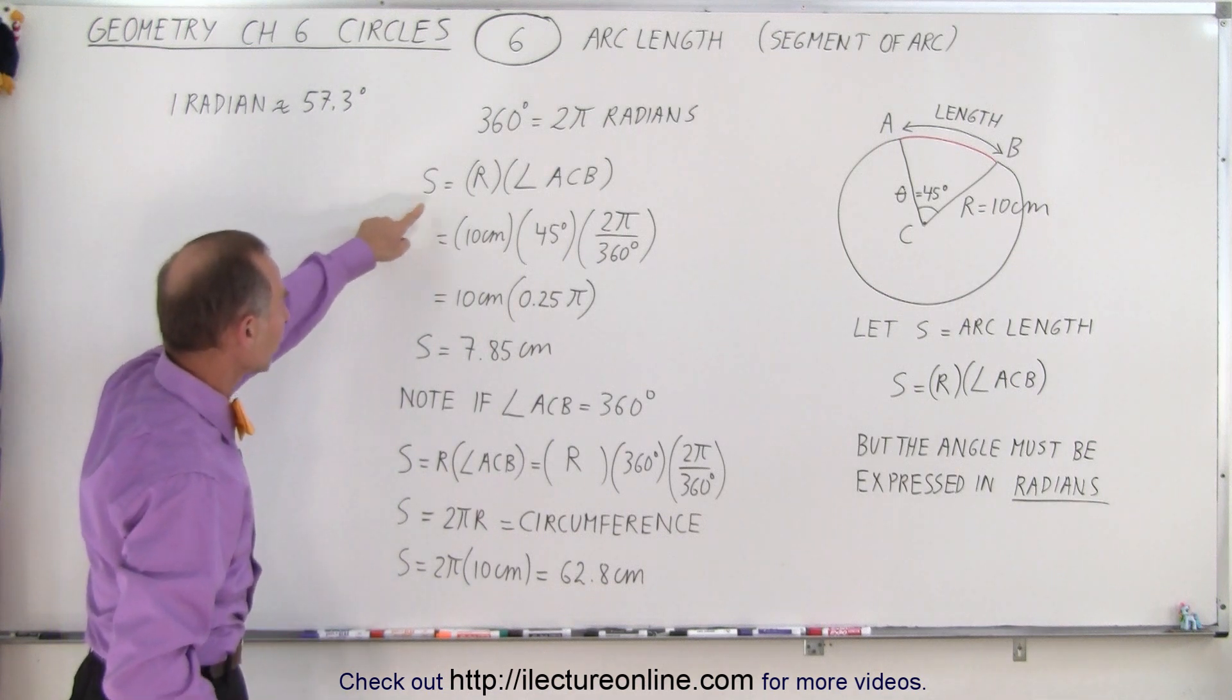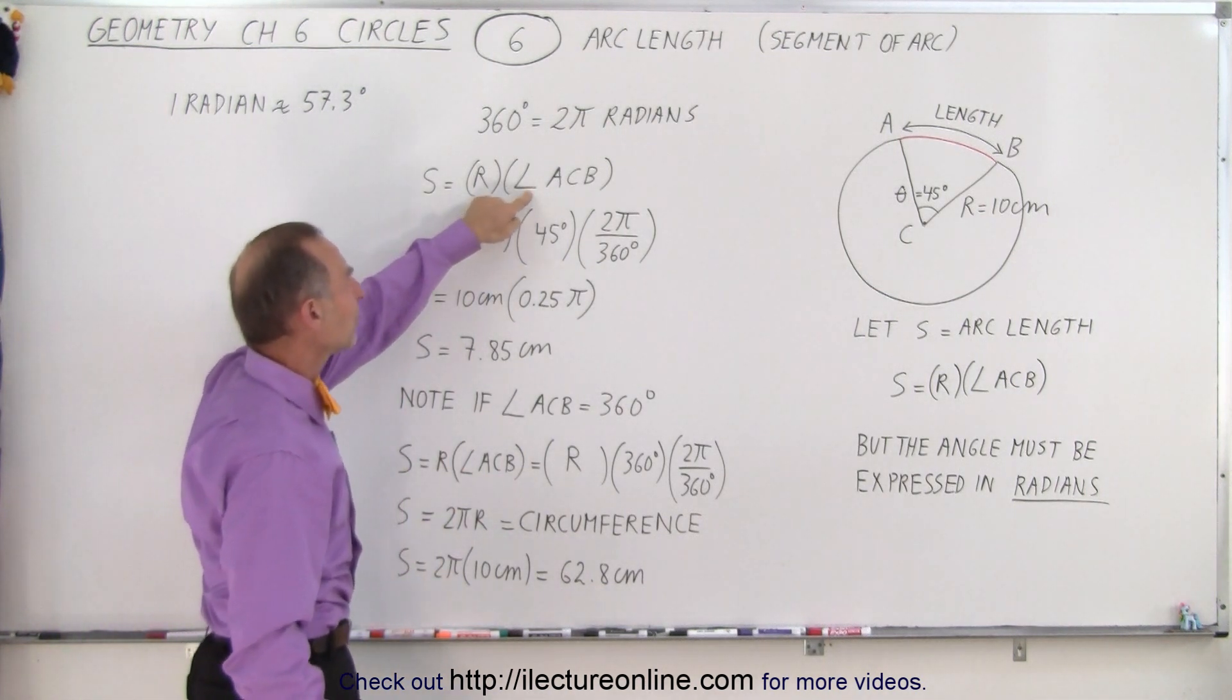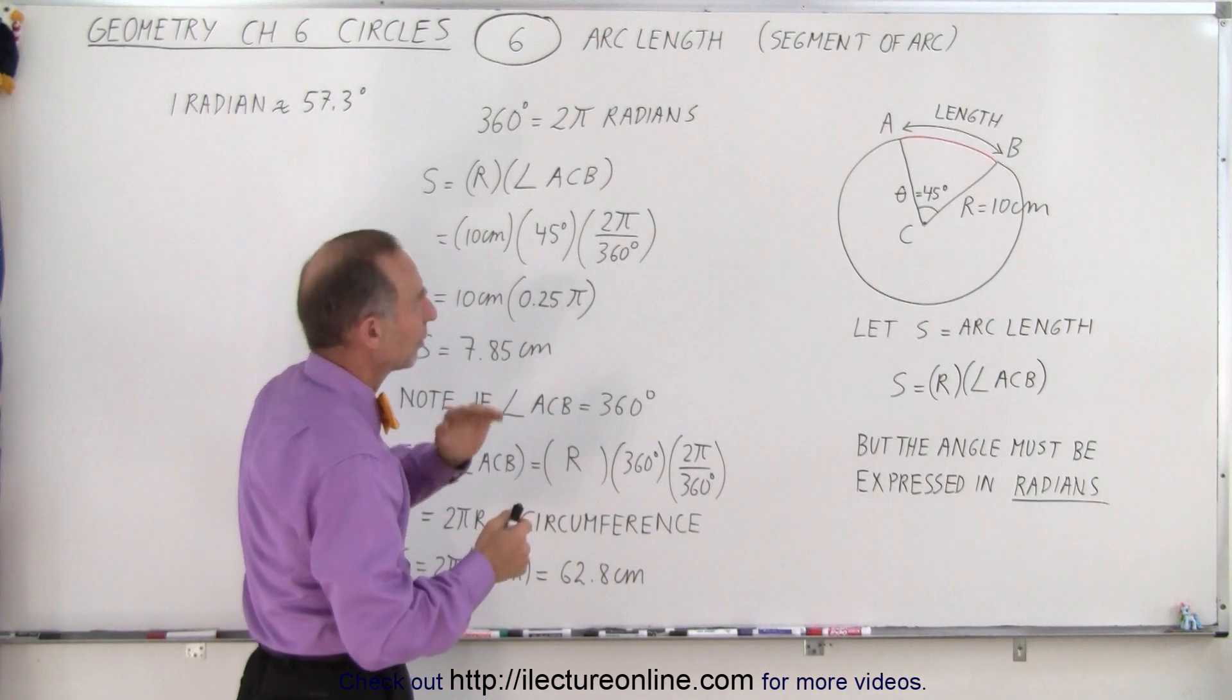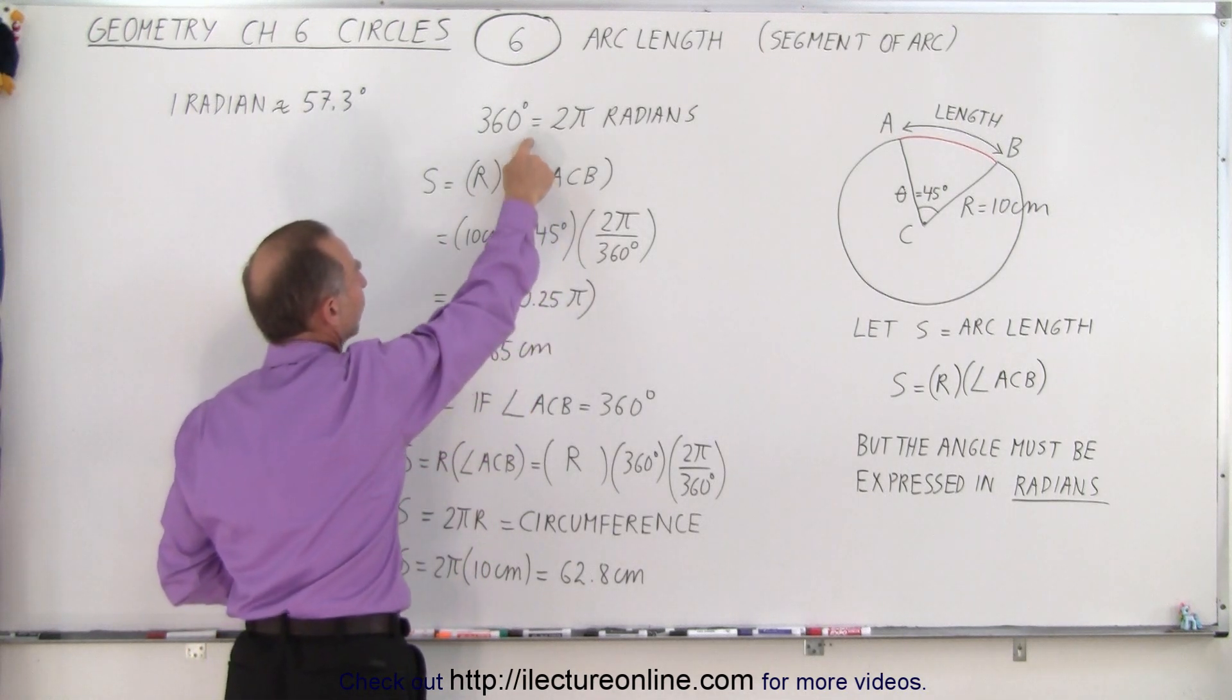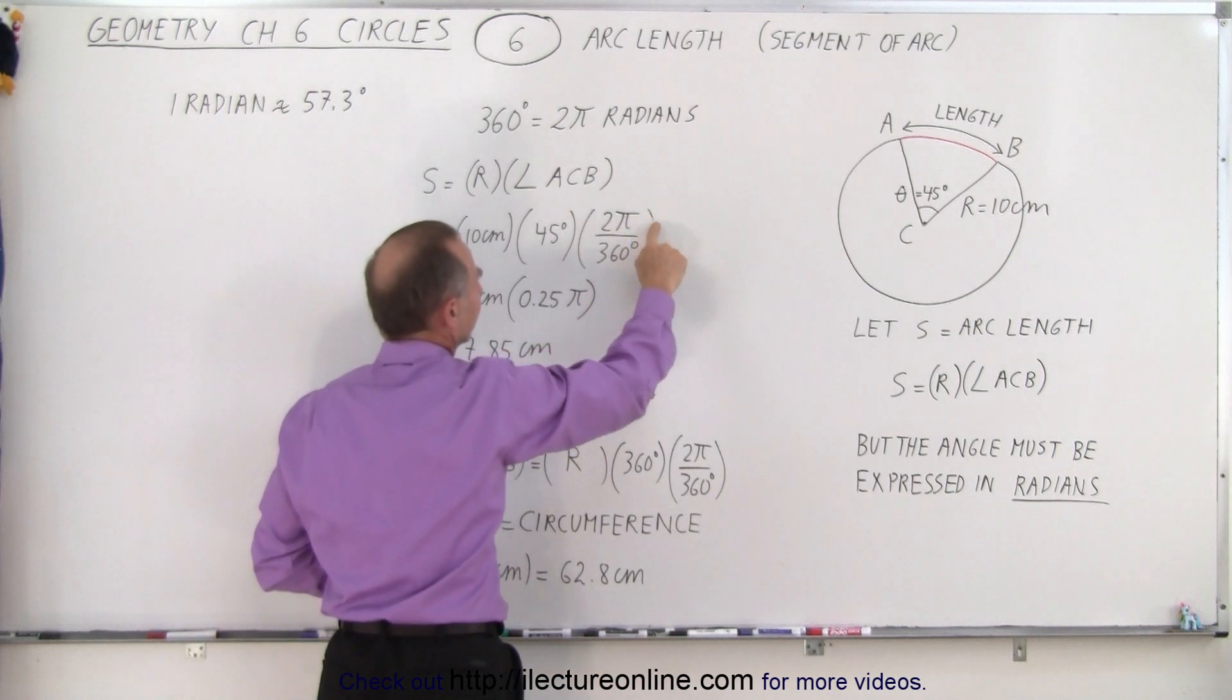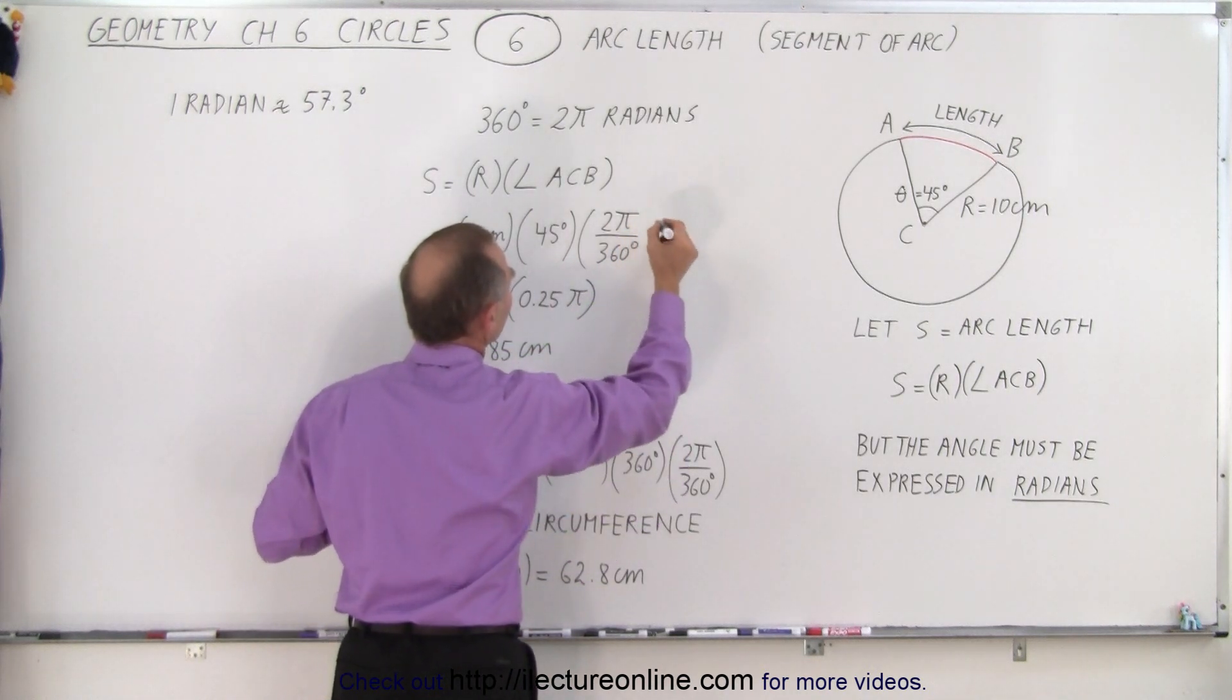So what we're going to do is we're going to multiply the radius of the circle, which in this case is 10 centimeters, times the angle subtended between the two lines from A to C and B to C. And so we know that's 45 degrees, but then we have to convert that to radians. So notice, matter of fact, it's probably better if I just write it like this, 2 pi radians.